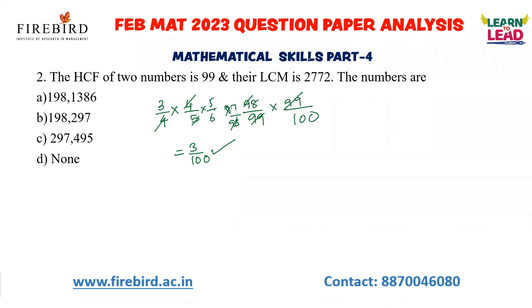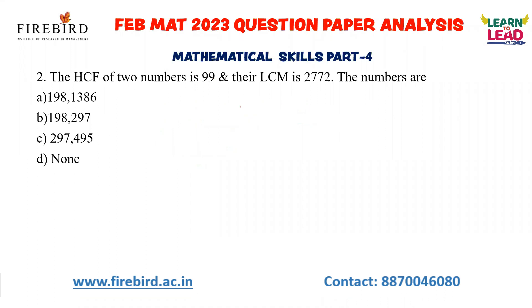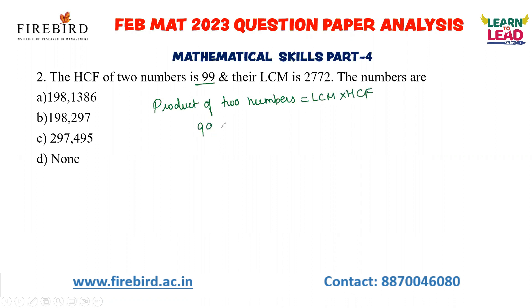Next: the HCF of two numbers is 99 and their LCM is 2772. Find the numbers. You should know the basic concept: the product of two numbers equals LCM × HCF. If HCF is 99, the two numbers can be written as 99A and 99B. So 99A × 99B = 99 × 2772. Cancelling 99, we get 99A × B = 2772.